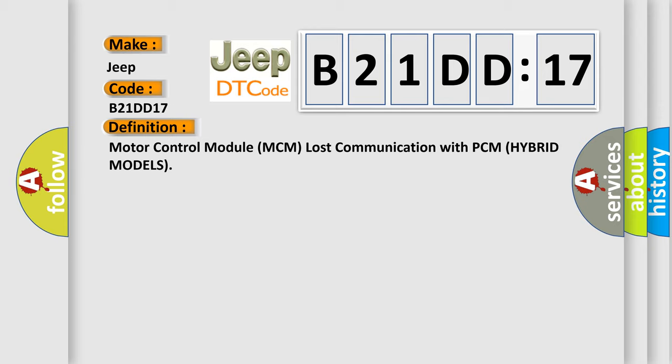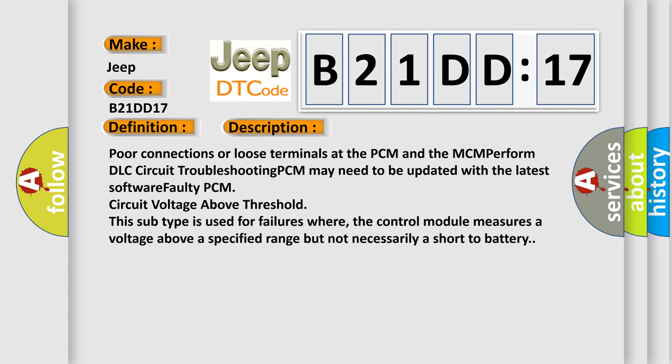The basic definition is motor control module MCM lost communication with PCM hybrid models. And now this is a short description of this DTC code: Poor connections or loose terminals at the PCM and the MCM, perform DLC circuit troubleshooting, PCM may need to be updated with the latest software, faulty PCM circuit voltage above threshold. This subtype is used for failures where the control module measures a voltage above a specified range but not necessarily a short to battery.